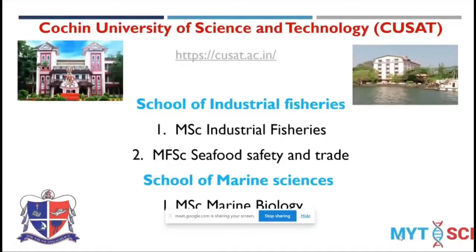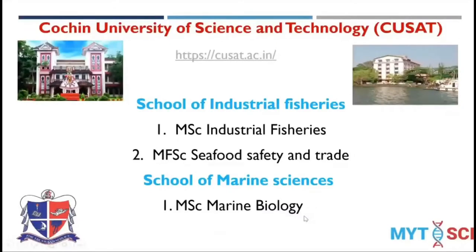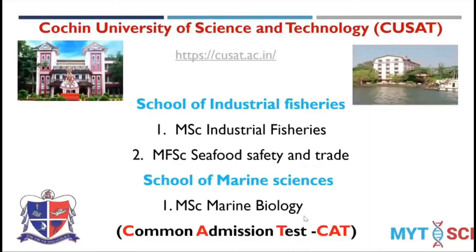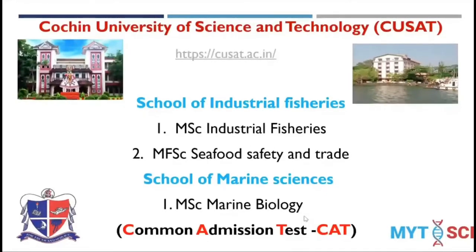The first institute is Cochin University of Science and Technology, CUSAT. After your bachelor's degree, they offer two schools: the School of Industrial Fisheries, which provides post-graduation in industrial fisheries and an MFSc in seafood safety and trade, and the School of Marine Sciences, offering MSc in marine biology. Admission is through a common admission test called CAT, though due to COVID-19 it may be cancelled — check their newsletters.